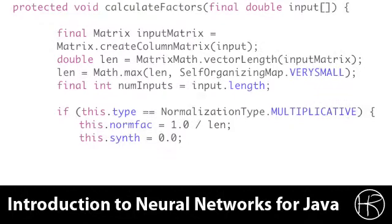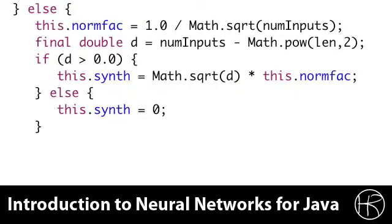The program then continues. If this is not multiplicative normalization, then it must be z-axis normalization, because these are the only two types of normalization we're evaluating in this course. The else statement that you see here will be executed if this is indeed z-axis normalization. We calculate the normalization factor by taking the reciprocal of the square root of the number of inputs. This normalization factor is going to be multiplied against all of the inputs to properly normalize them. We're then going to calculate the number of inputs minus the length squared.